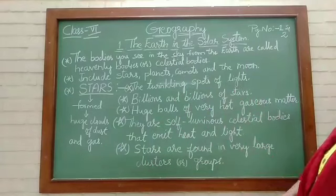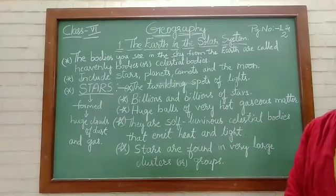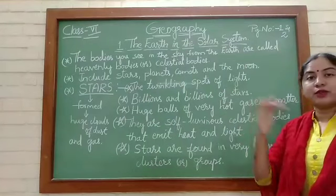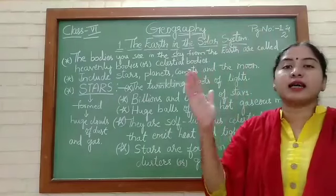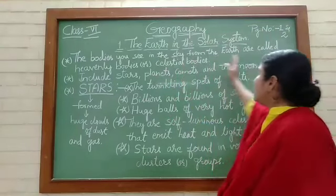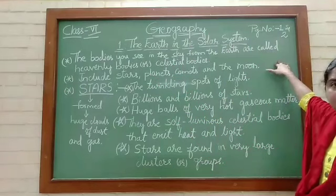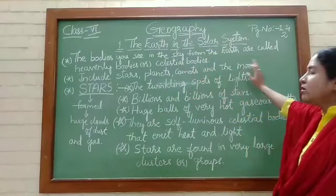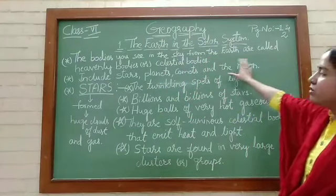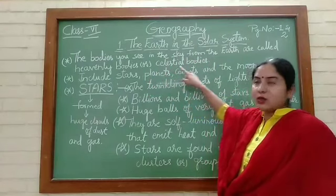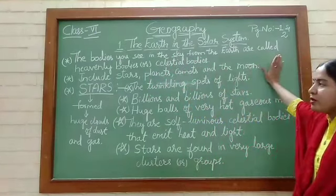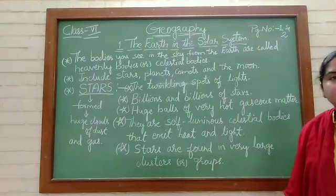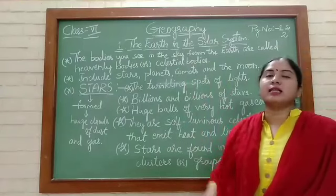The bodies you see in the sky from the earth are called heavenly bodies. From your place, what are the things you are seeing in the sky? Those are called heavenly bodies or celestial bodies. Which includes stars, planets, comets, and the moon. So these are the heavenly bodies which we can see from the earth.